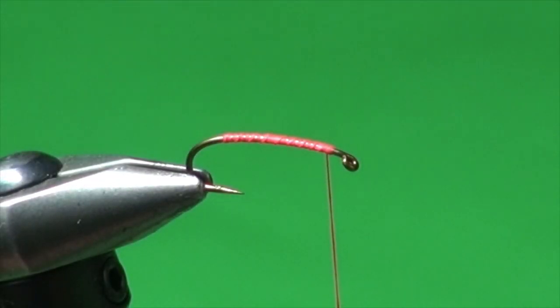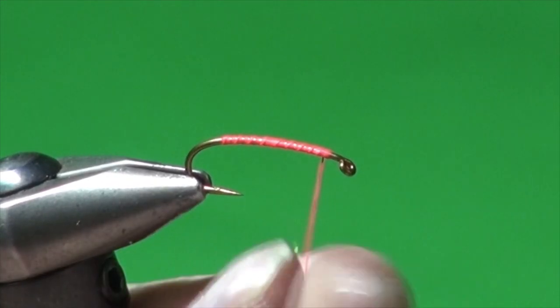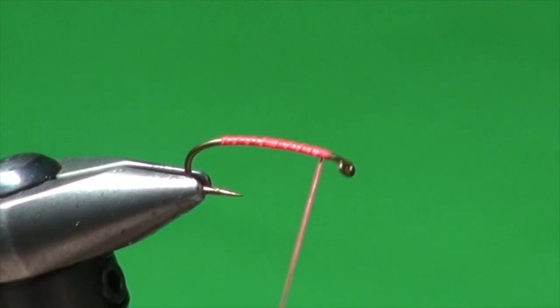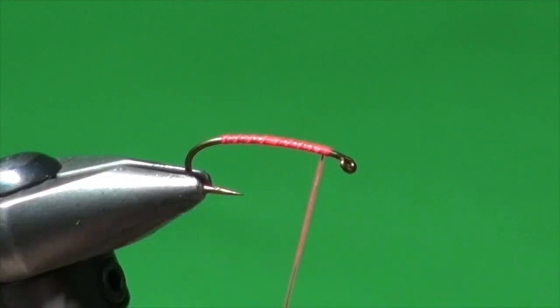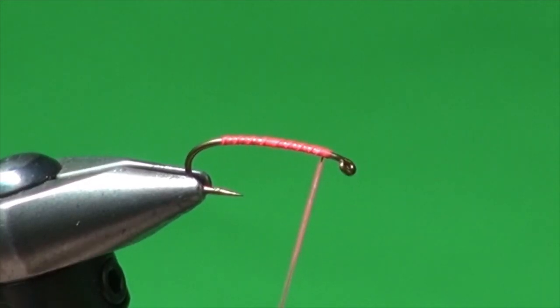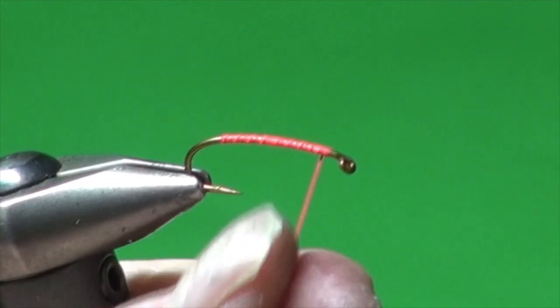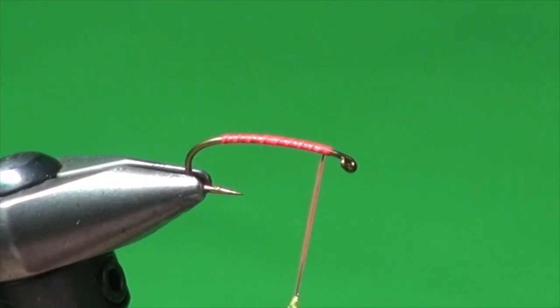And again, you can tie this in a lot of different colors if you want, but this is a bit of an attractor fly. Cutthroat love it. And also when I go down to Argentina, big rainbows on Jurassic Lake, Lago Strobel, or the surrounding lagunas love a stripped Chernobyl-like fly like this one. We've just got a little coating on there.